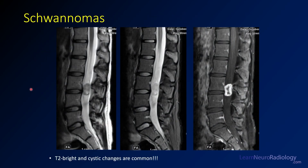This is an example of a schwannoma. Here you have a T2, a T2 fat-saturated, and a post-contrast fat-saturated image. You see a well-demarcated, slightly T2 hypointense mass — kind of similar to muscle but darker than CSF. On fat saturation, it almost blends in with the CSF. But on post-contrast, you have avid enhancement and well-defined margins. This one has a little bit of cystic degenerative change in the center, which is very common for schwannoma.